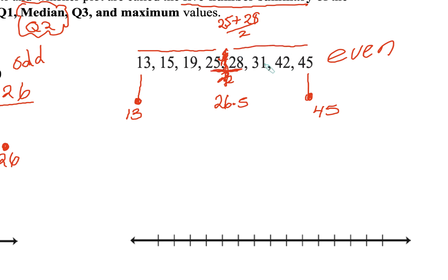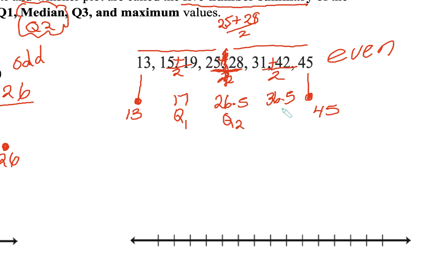And 28 to 45 is my upper portion. From the lower half, I need to find the median, which means I'm going to add 15 and 19 — those are in the middle — and divide by 2. That would be 17. And I'm going to do the same for the upper half: add 31 and 42 and divide by 2. That gives me 36.5. So this is my minimum, Q1 is 17, Q2 is 26.5, Q3 is 36.5, and that's our maximum.